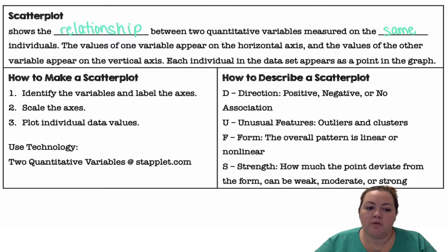To make a scatter plot, we're going to first identify the variables and label the axes, scale the axes, and plot the individual data values. If we want to do this with technology, I would recommend going to staplet.com and picking two quantitative variables.